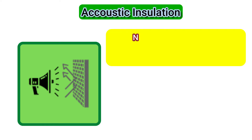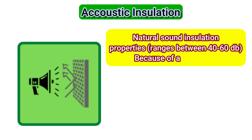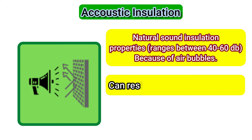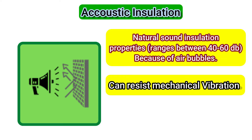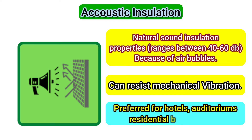Next is the acoustic properties of ALC Panels. ALC Panels have natural sound insulation properties ranging between 40 to 60 dB, because of the presence of air bubbles. They can also resist mechanical vibrations. They are preferred for hotels, auditoriums, residential buildings, etc.